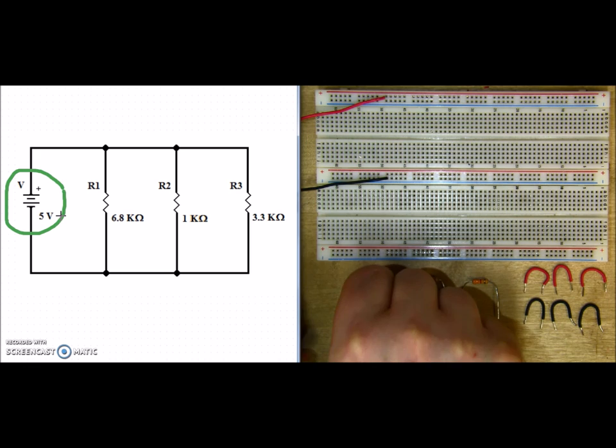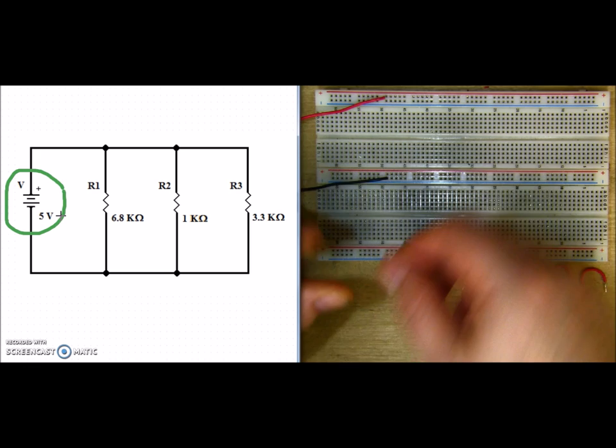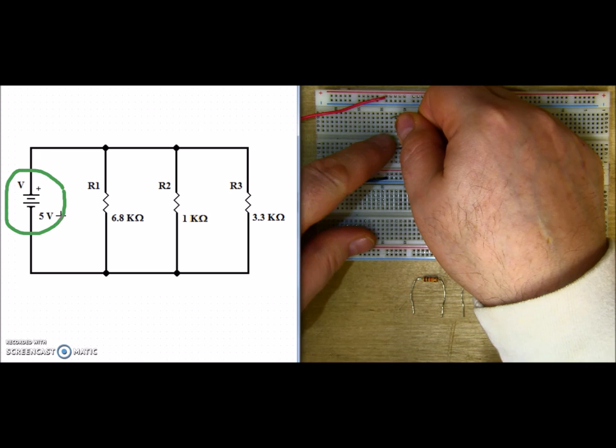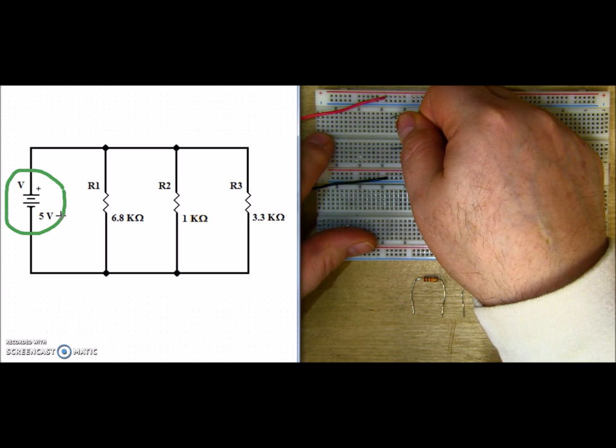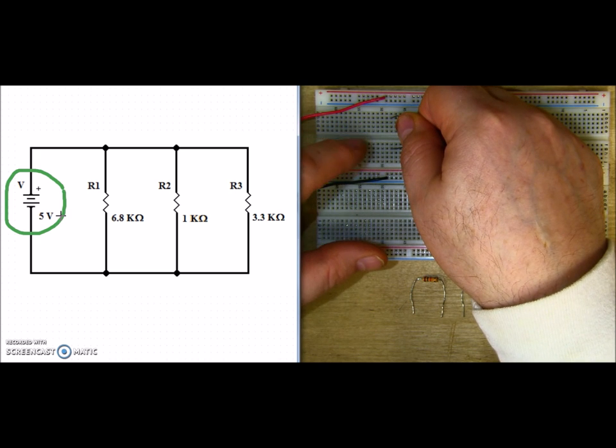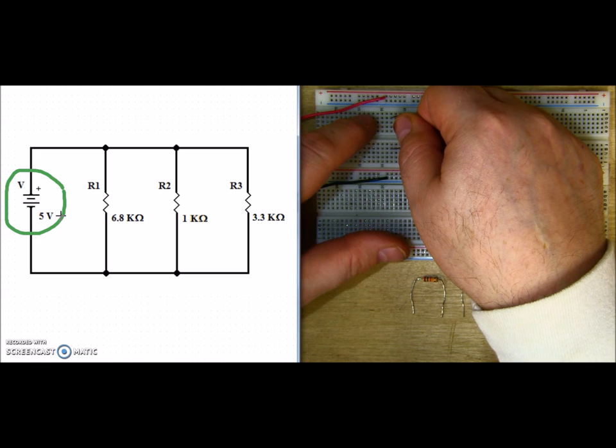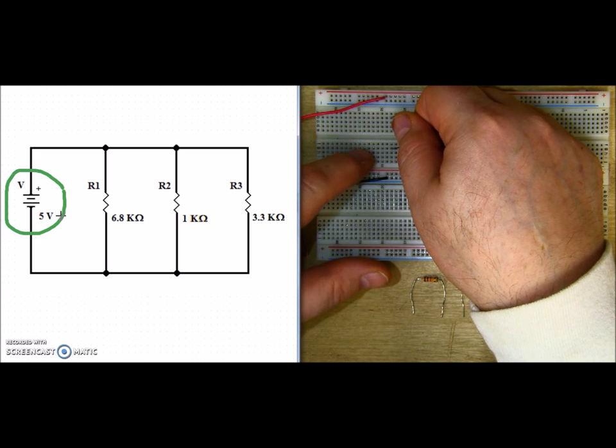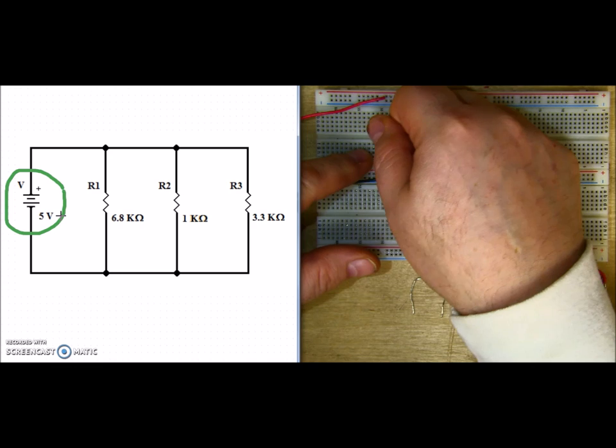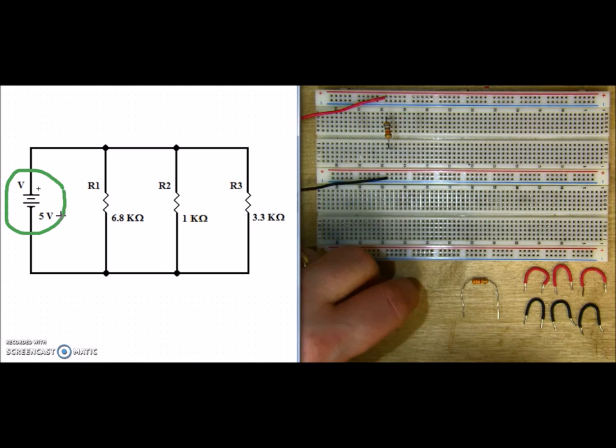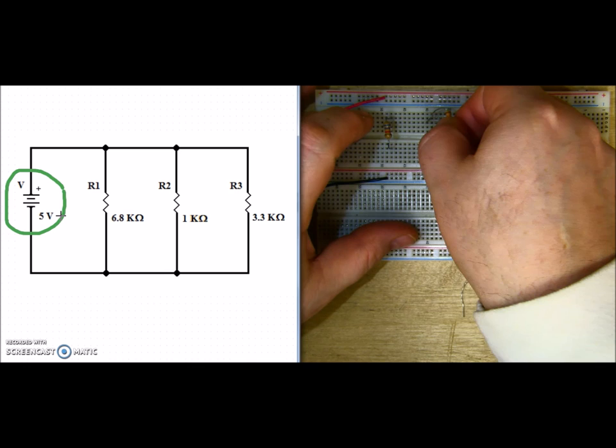Let's go ahead and take R1. I'm going to put R1 on the board like this, making sure that I put it across the channel. Because remember, the channel breaks the contact between the upper portion of the white section and the lower portion of the white section. So there's R1.